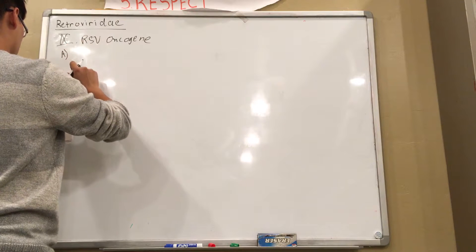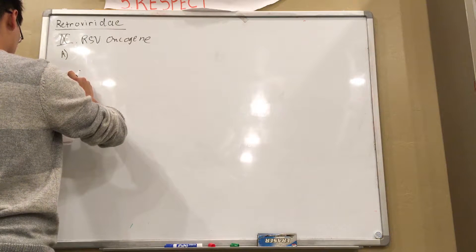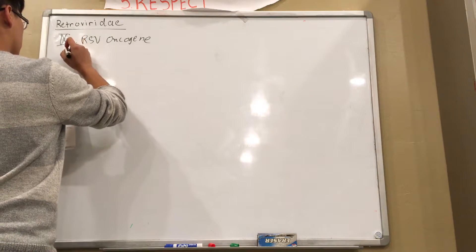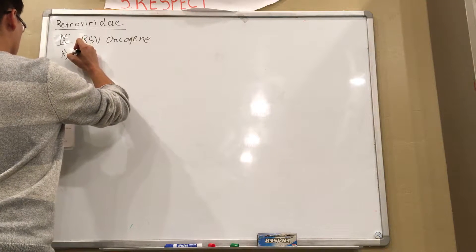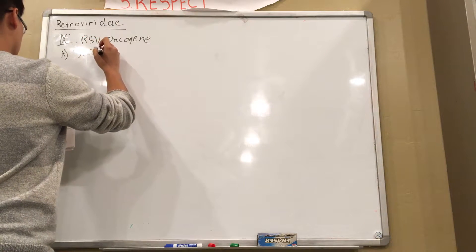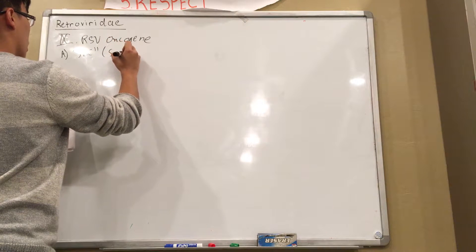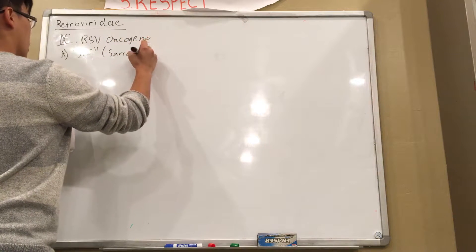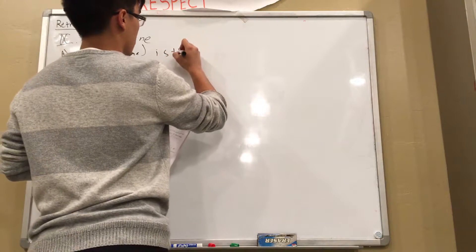There are a few genes. Here's some stuff about the RSV oncogene. First, there's this gene called SARC. It stands for sarcoma. This gene is the oncogene.